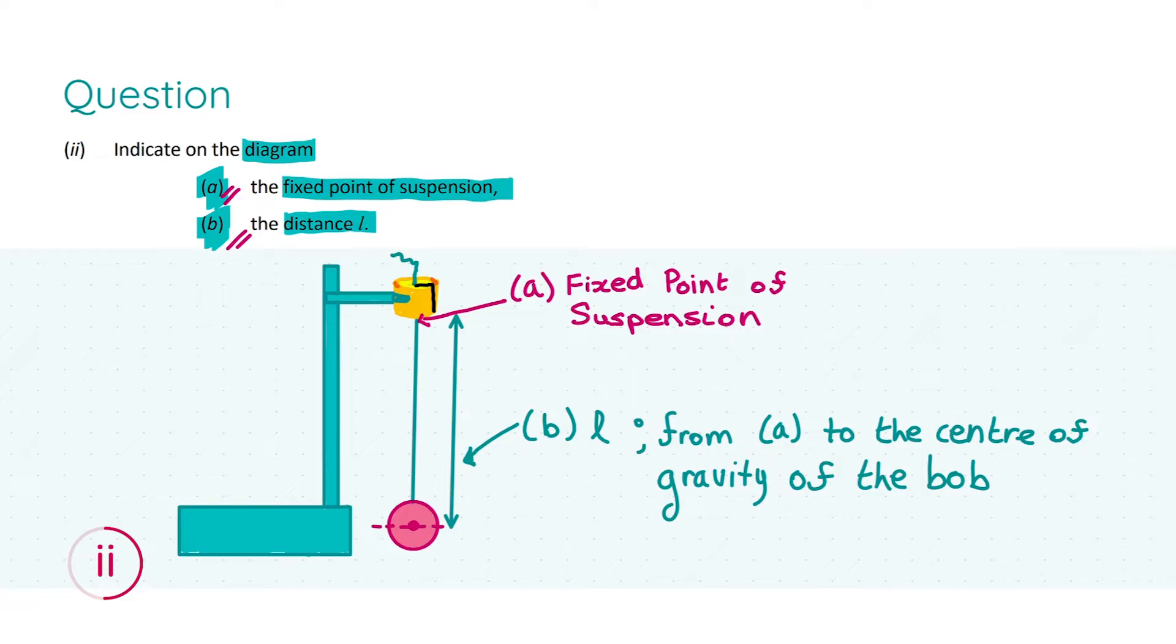For part a, we're asked to highlight the fixed point of suspension, and that will give you three marks if you indicate that it's at the very bottom of the cork. You'll get your other three marks for showing that the distance l in part b is from the fixed point of suspension to the center of gravity of the bob. That's the l that we measure in the experiment. Because we measure from the fixed point of suspension to the center of gravity, we treat the bob as a point particle—the mathematics suggests that all of the mass is concentrated at the center of mass of the object, in this case the bob.